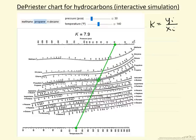We can change the pressure with the slider, which will move this point in the simulation. We can change the temperature with this slider, which will move this point. The way the De Priester chart works is for propane,